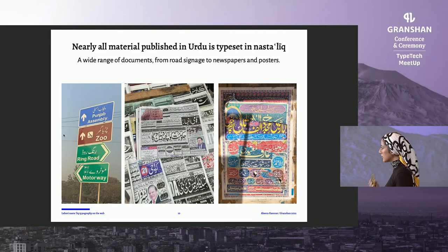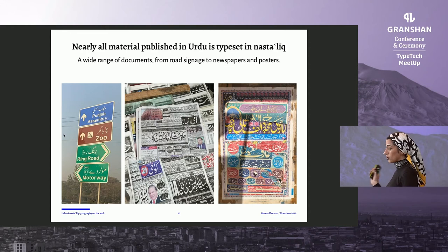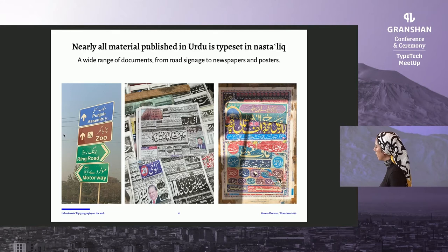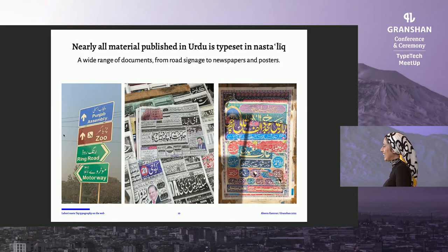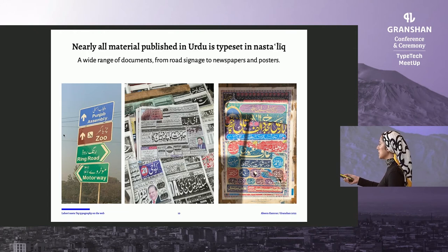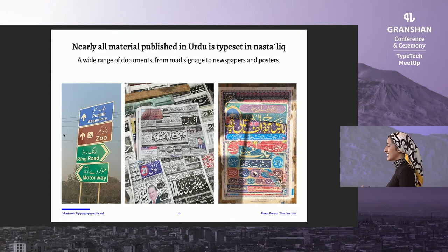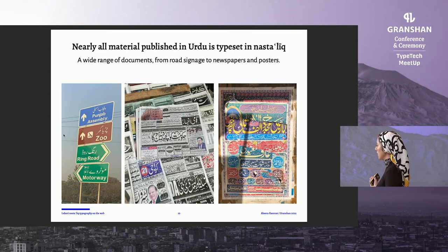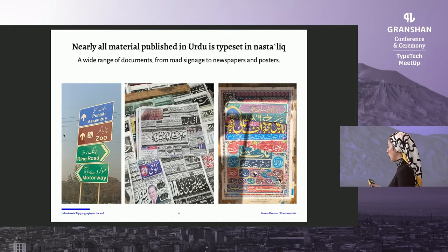Nastaliq continues to dominate all print production in Pakistan. You can see a very wide range of documents typeset in Nastaliq: on the far left is an image from road signs in Lahore, a big city in Pakistan, typeset in Nastaliq and a little hard to read when you're driving fast. In the center is a collection of local newspapers — every single one of them typeset in Nastaliq, most likely in a single typeface. And on the far right are really common and popular event posters in the city, again all in Nastaliq.